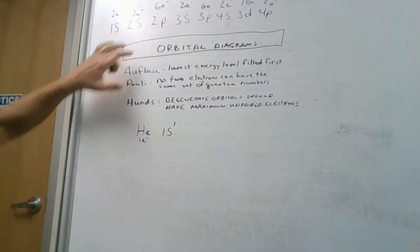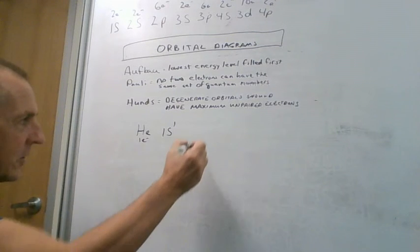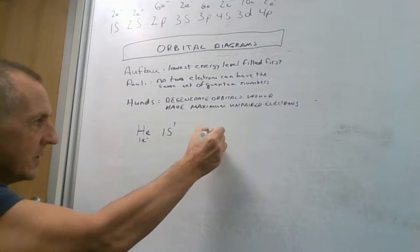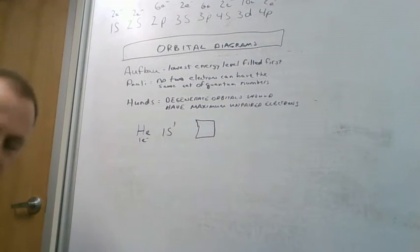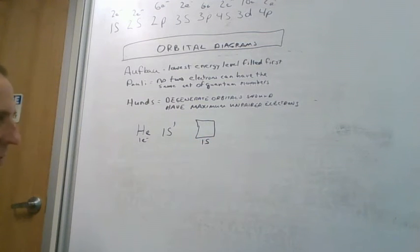What we're going to talk about now is orbital diagrams, which gives us a little bit more information. An orbital diagram is just a way of showing a little picture for each of the orbitals. For example, this would be a picture of what's going on in our 1s orbital.